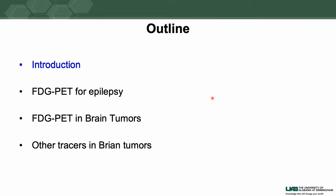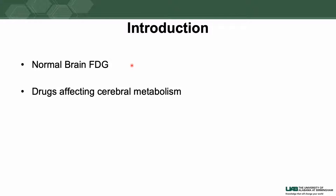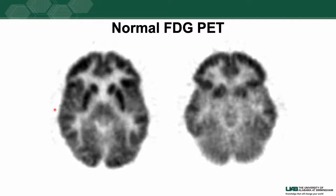In the introduction we will go through a little bit about normal brain FDG distribution, then we will talk about the role of various drugs which can affect the cerebral metabolism. It is a lot of repetition, but knowing the normal distribution will definitely make it easier to pick up abnormal distribution patterns on FDG-PET.